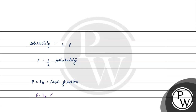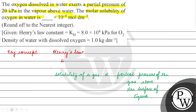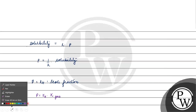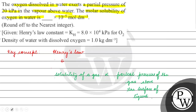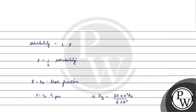P is equal to K into mole fraction of the gas. Partial pressure of oxygen will be equal to 20 kilopascal by 8 into 10 raised to the power 4 kilopascal. That is 10 raised to the power 3 pascal. The kilopascal units cancel out and this will give us 2 over 5.